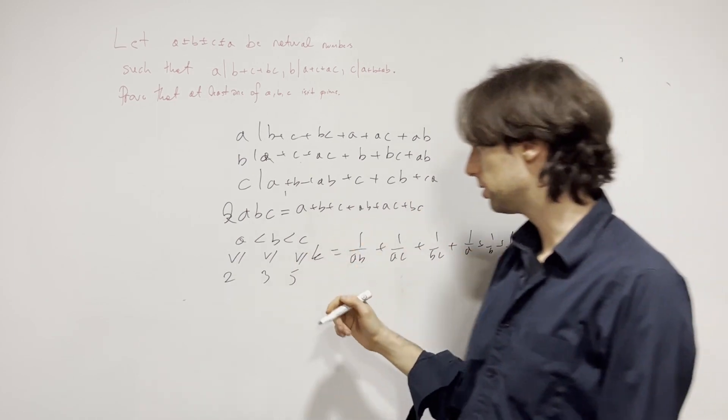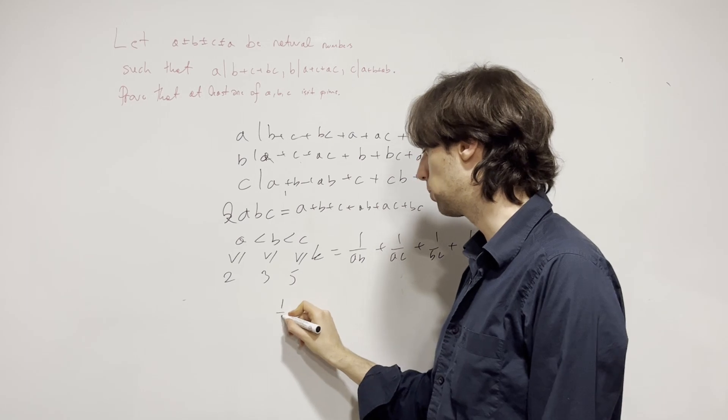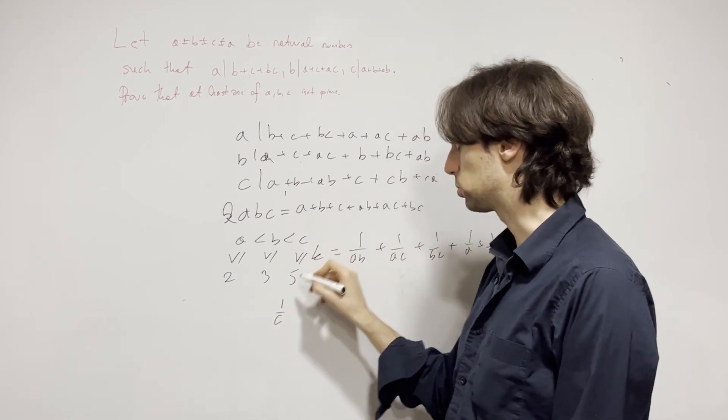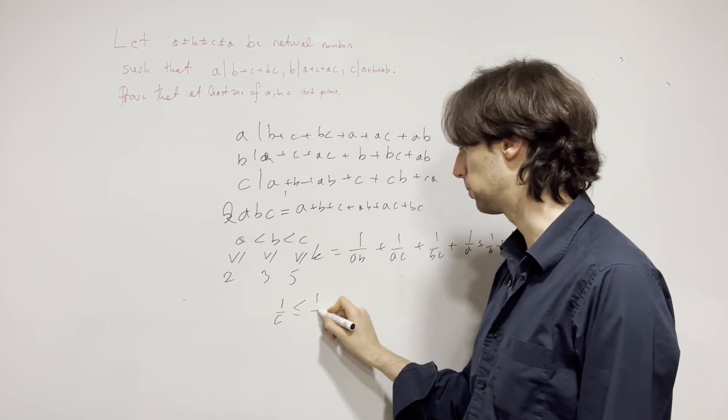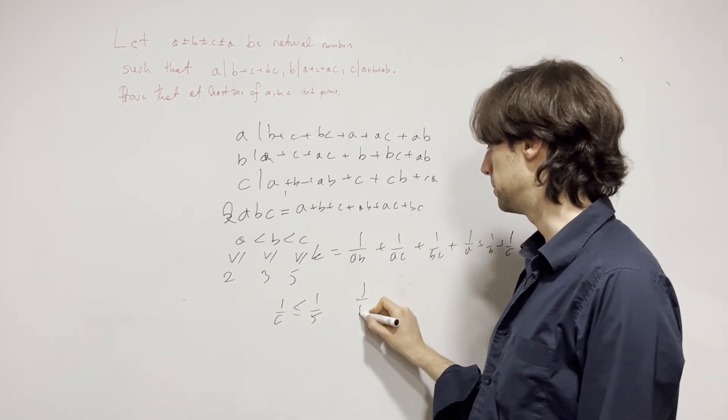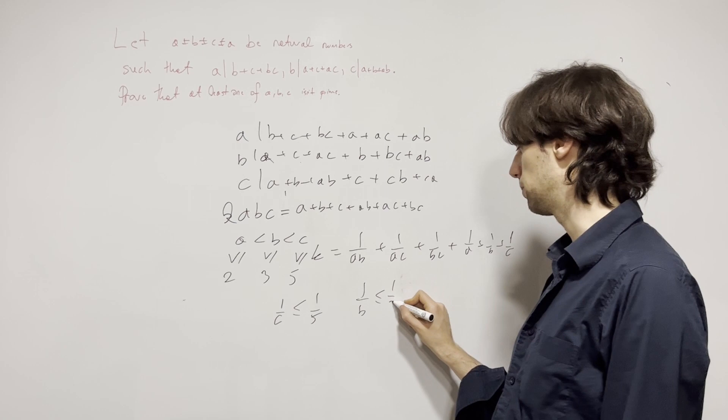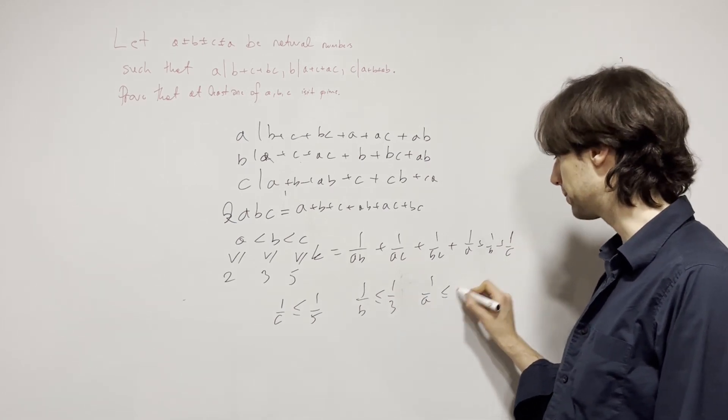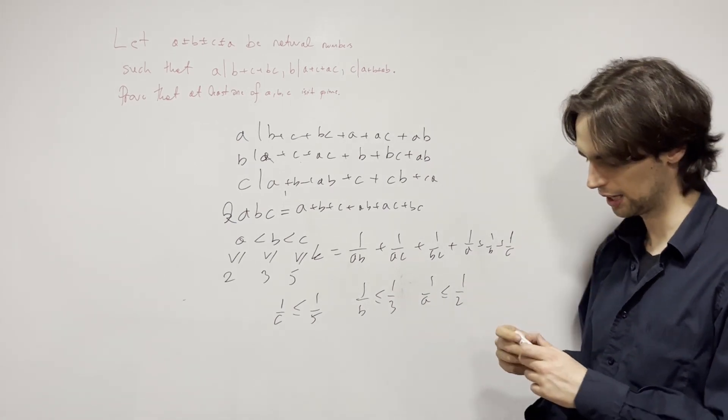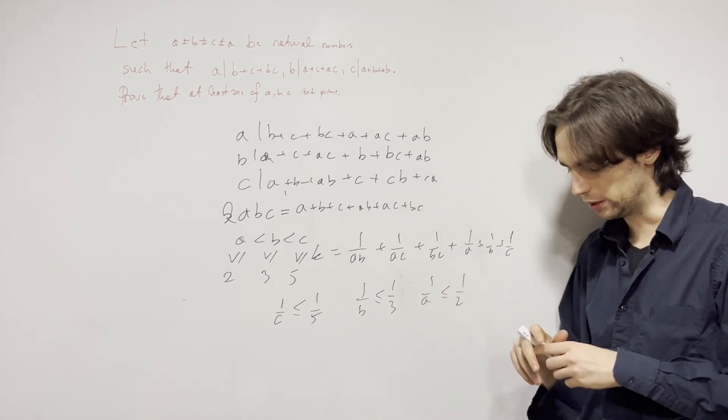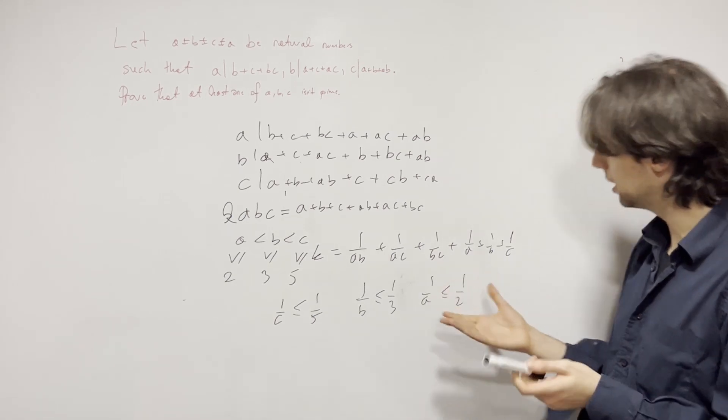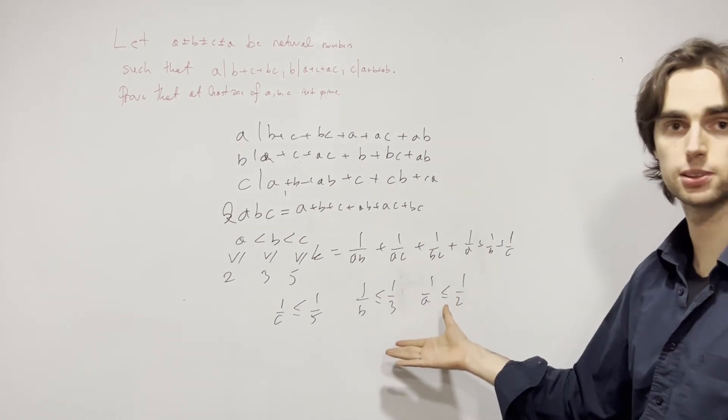Then, from here, we would have that 1 over C, because C is greater than something, that means 1 over C is going to be less than or equal to 1 over 5. 1 over B is going to be less than or equal to 1 over 3. 1 over A is going to be less than or equal to 1 over 2. And so, we finish up quite quickly. I actually don't know if we finish up or not. This is the first time I'm doing a problem.